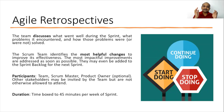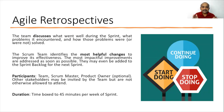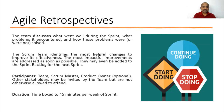Not every action item identified in the retrospective can be acted upon, because at the end of the day you have limited resources, limited time, and limited budget. So if the team identifies ten action items, you can probably act on two or three depending on the resources, time, and constraints. You prioritize those three action items and communicate them to the team.